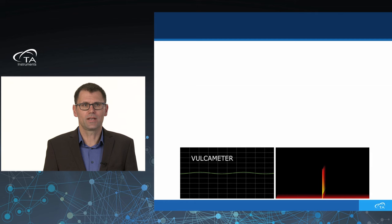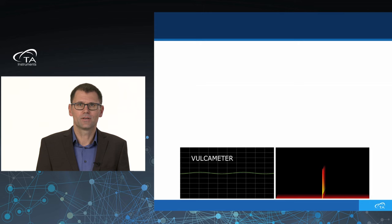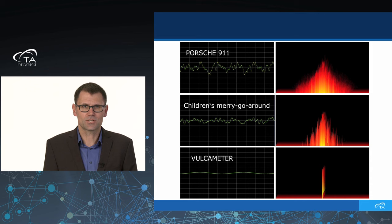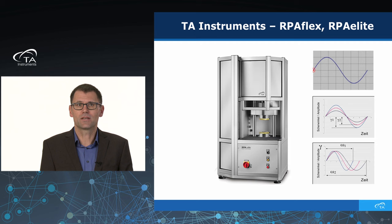If you measure the signal of a tuning fork, the Fourier transformation shows one signal at one frequency — that is all. When you scan a children's merry-go-round, you get more frequencies and a broad Fourier spectrum. Maybe on the motorway you sometimes hear a Porsche — that also gives a broad spectrum. But for a tuning fork, a children's merry-go-round, and a Porsche, a simple one-frequency measurement cannot differentiate them. On our RPA Flex and RPA Elite, we can change frequency and strain to have measurements at different shear rates.